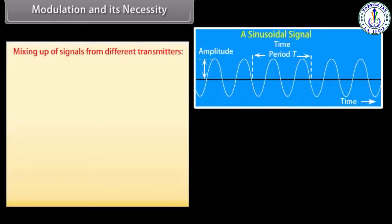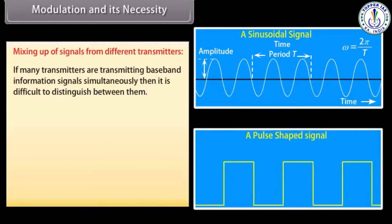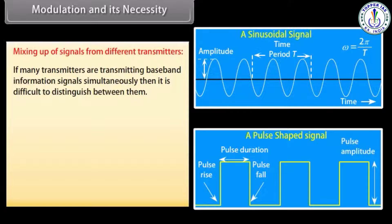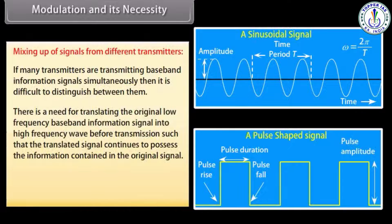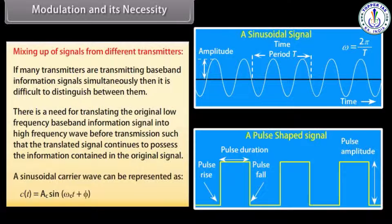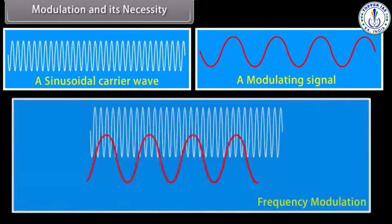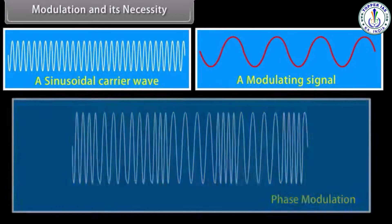Mixing up of signals from different transmitters: if many transmitters are transmitting baseband information signals simultaneously, it is difficult to distinguish between them. There is a need for translating the original low frequency baseband information signal into a high frequency wave before transmission, such that the translated signal continues to possess the information contained in the original signal. There are three types of modulation: amplitude modulation, frequency modulation, and phase modulation.